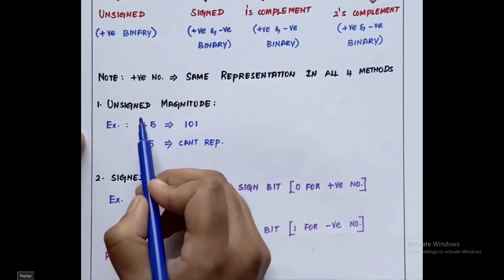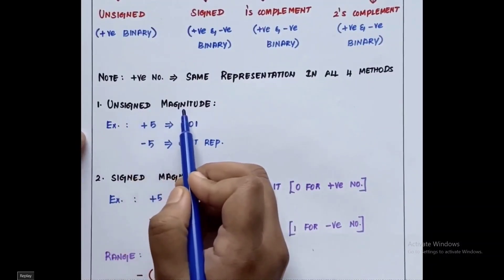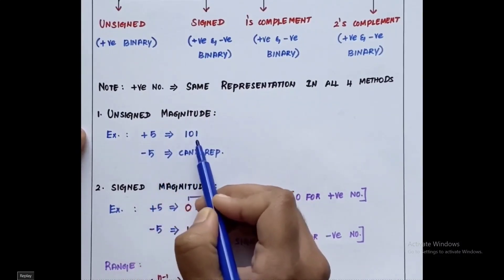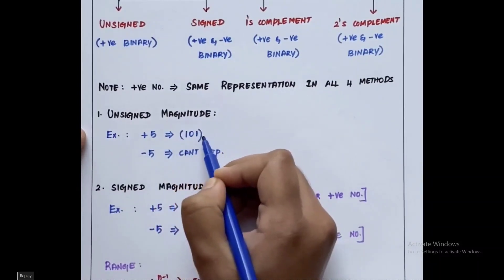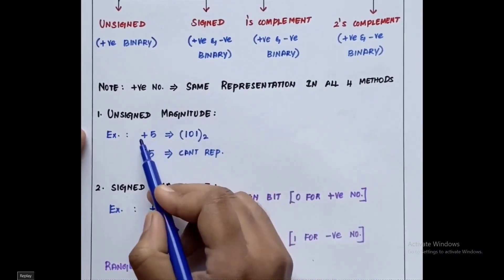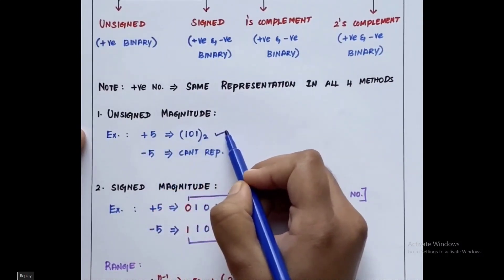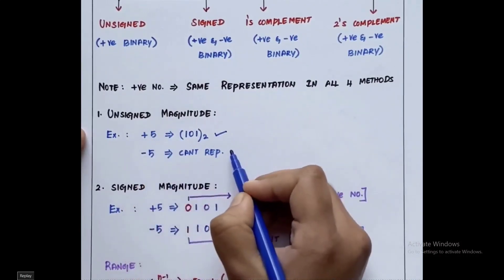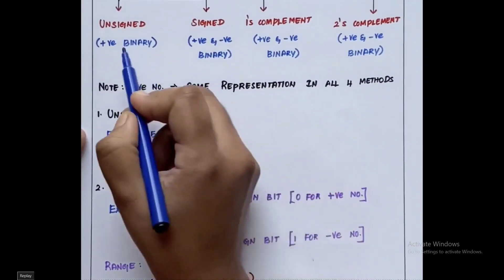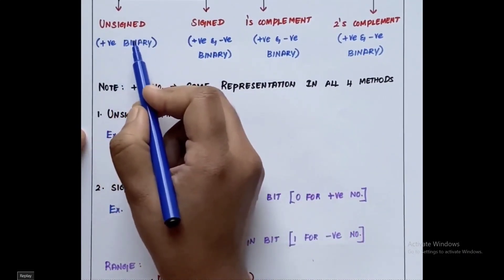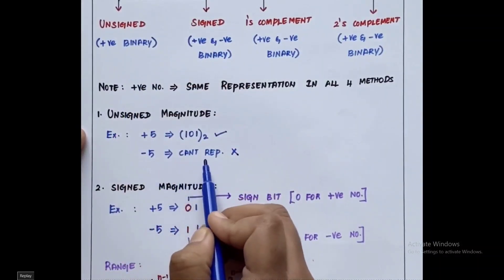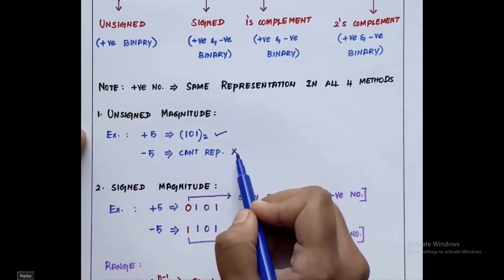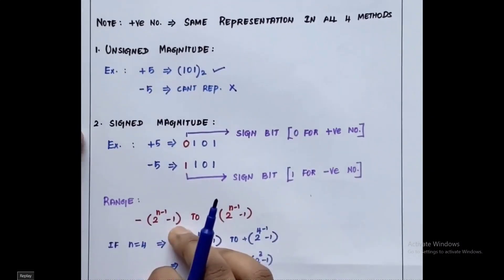First is unsigned magnitude representation. Unsigned means it is used to represent a positive binary number. For example, positive 5 using the 8-4-2-1 technique can be written as 101 in base 2. When it is minus 5, since unsigned magnitude representation is used only for positive binary numbers, negative numbers cannot be represented. So whenever it is unsigned type, remember it is only for positive numbers.